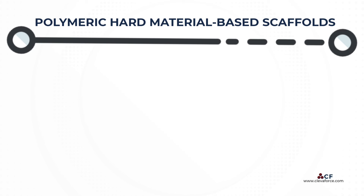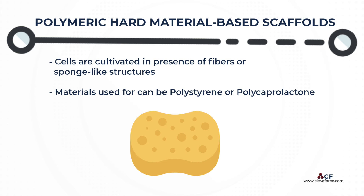For polymeric hard material-based scaffolds, cells are cultivated in the presence of fibers or sponge-like structures. Cells recover a more physiological shape because they are not plated on a flat surface. Materials used for these supports can be polystyrene, adapted for imaging studies because of its transparency, but also biodegradable polymers like polycaprolactone, which are preferentially employed since they produce monomers that are easily removed by the natural physiological pathway when implanted.